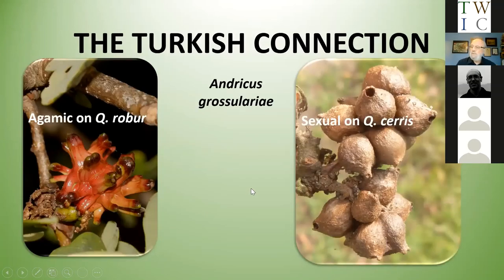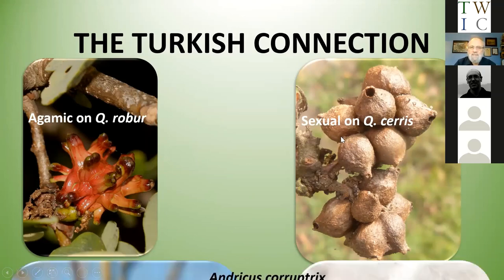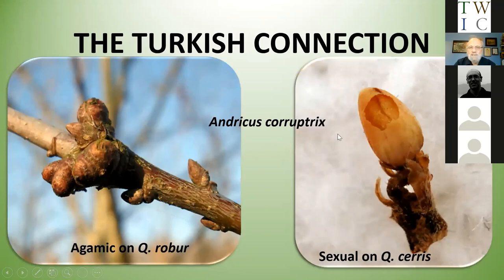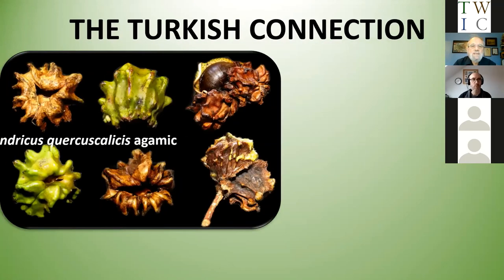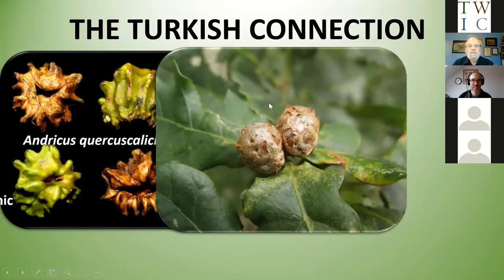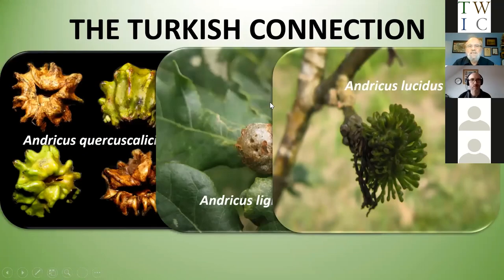Regarding the importance of Turkey Oaks: not only do we have alternation of generations, we have alternation of hosts. Andricus quercuscalicis has an agamic generation looking a bit like a knopper gall on Quercus robur, and a sexual generation entirely different on Quercus cerris. The same applies to Andricus corruptrix — the agamic generation is on Quercus robur and the alternate generation on Quercus cerris.